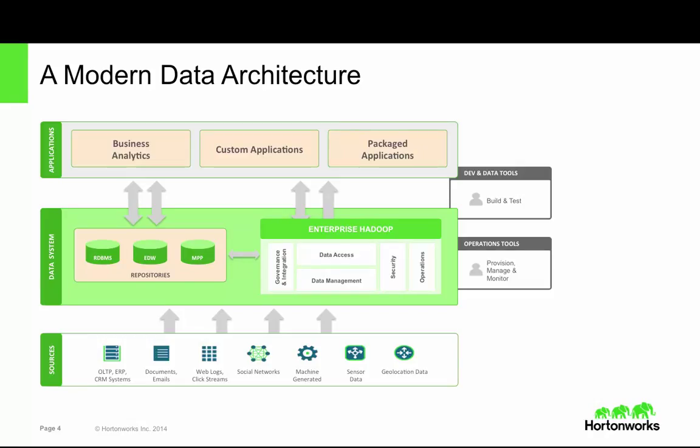Let me set the stage for Rohit and Vinod. This is a modern data architecture to store and process data from a wide variety of sources. Data comes in structured columnar formats and also newer, less structured formats like those found in human-generated content, like Word documents or emails. Also in weblogs and clickstreams, and social content like tweets, and in machine, sensor, and geolocation data.